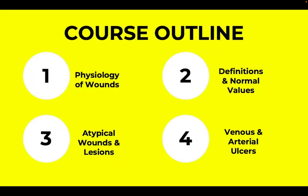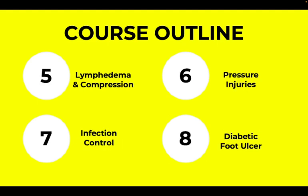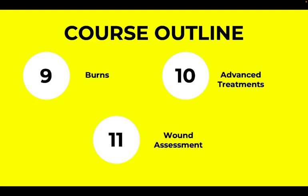The course outline has a total of 11 lessons: Lesson 1 is Physiology of Wounds, Lesson 2 is Definitions and Normal Values, Lesson 3 is Atypical Wounds and Lesions, Lesson 4 is Venous and Arterial Ulcer, Lesson 5 is Lymphedema and Compression, Lesson 6 is Pressure Injuries, Lesson 7 is Infection Control, Lesson 8 is Diabetic Foot Ulcers, Lesson 9 is Burns, Lesson 10 is Advanced Treatment, and Lesson 11 is Wound Assessment.